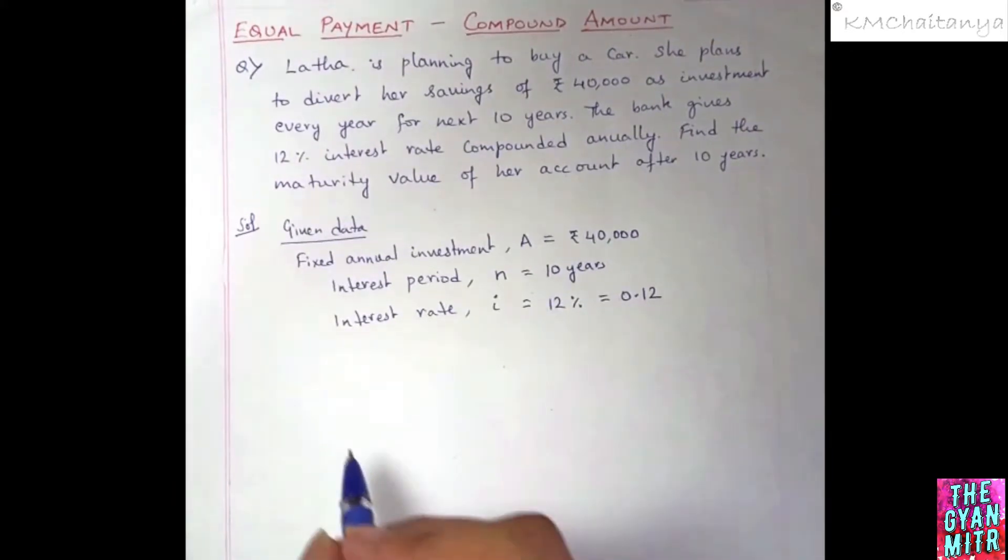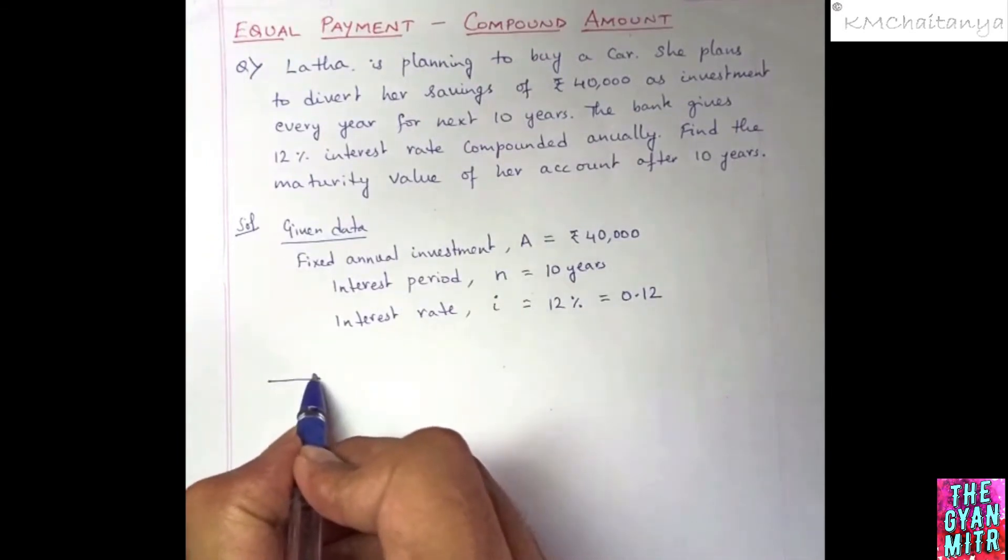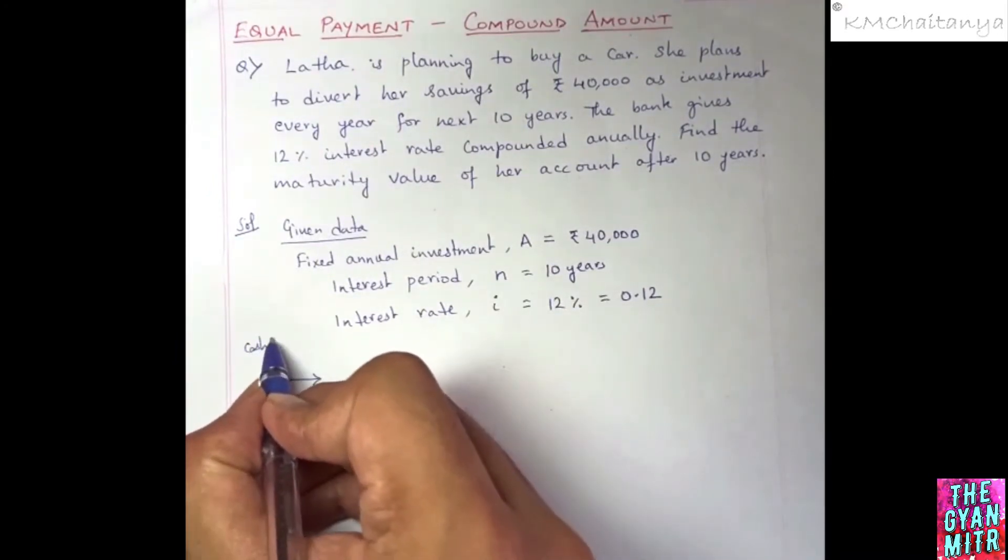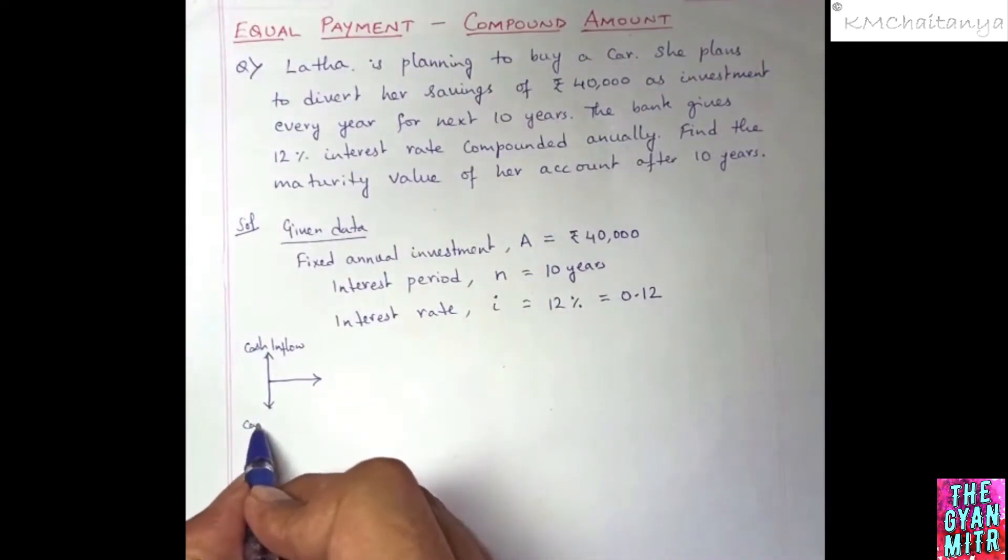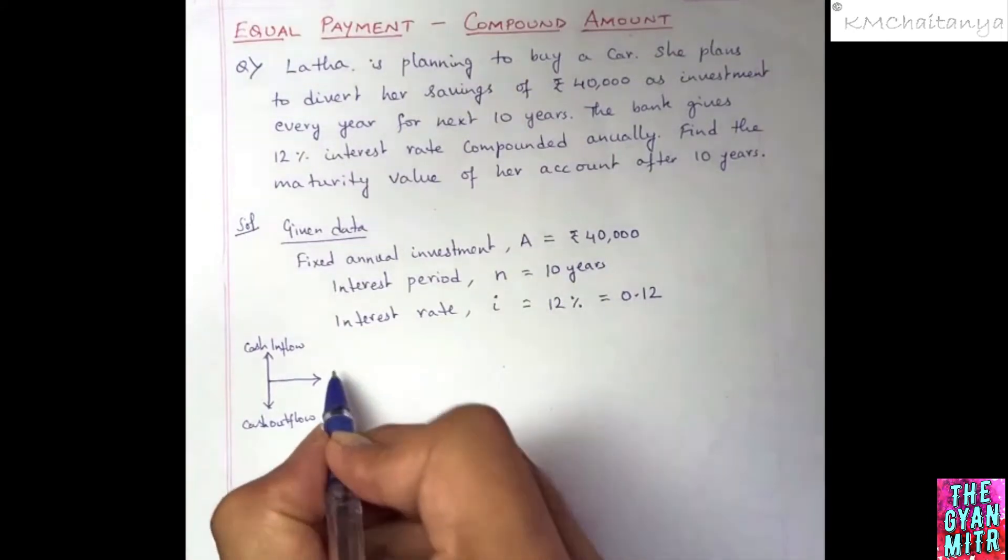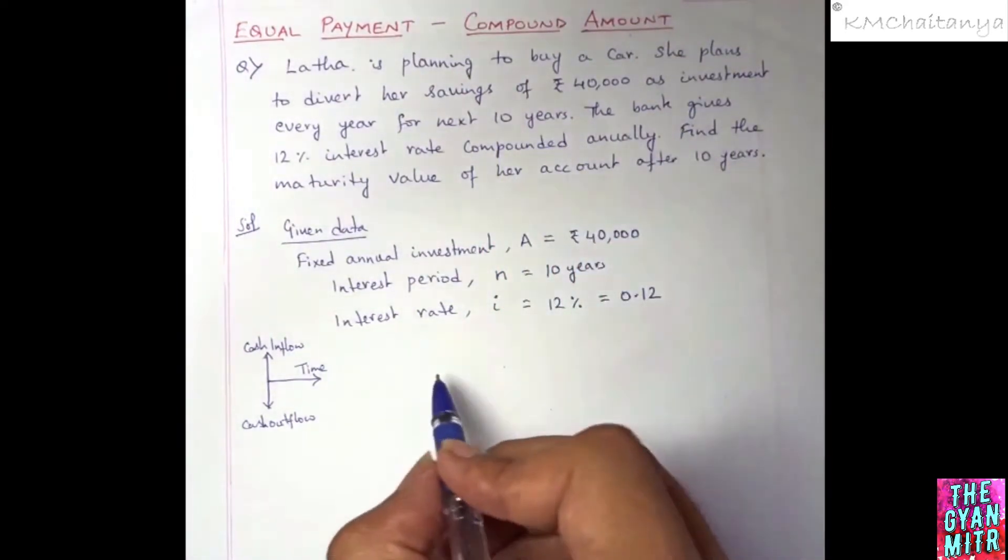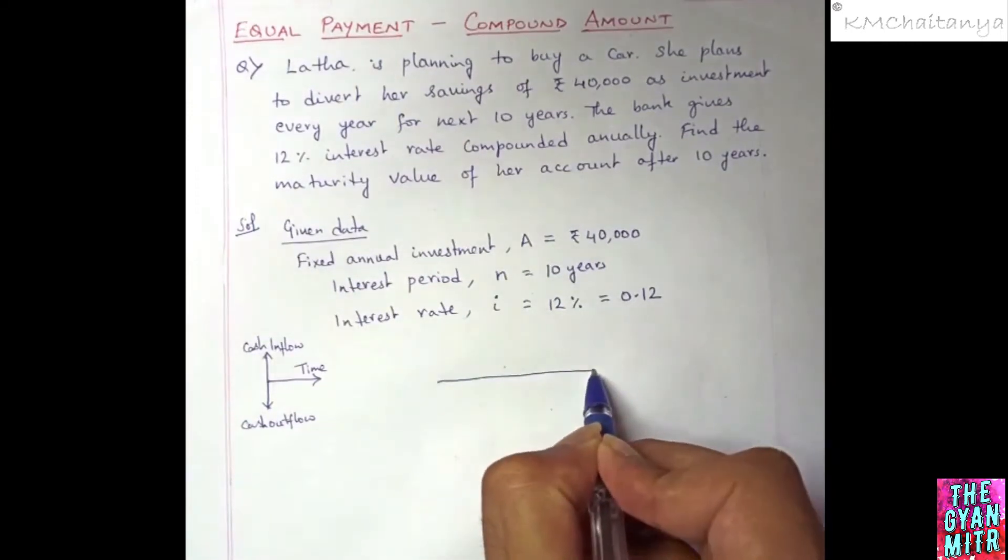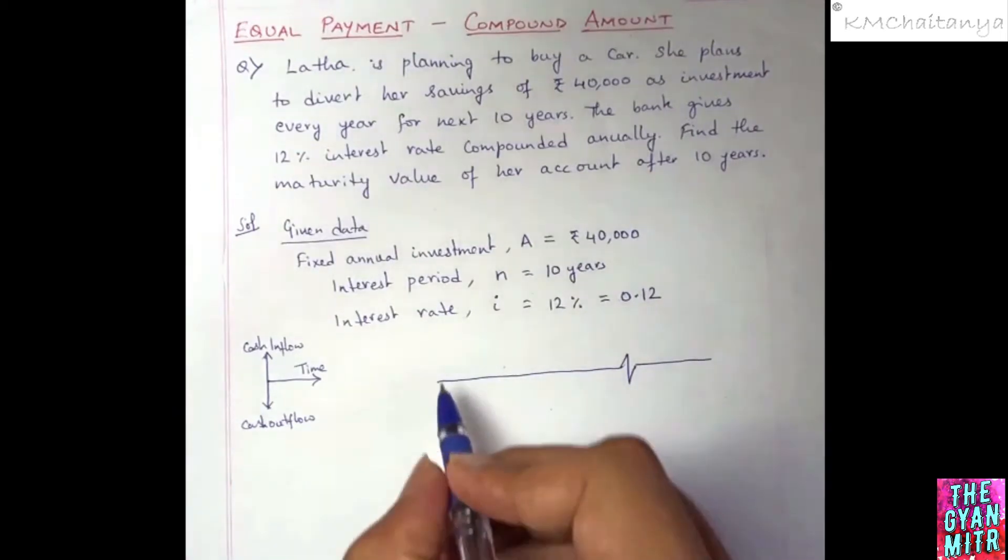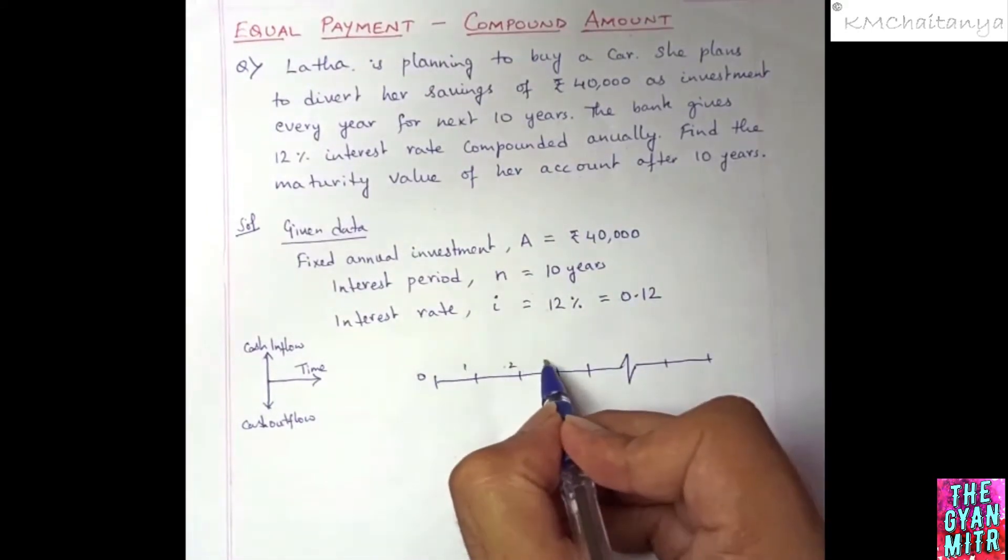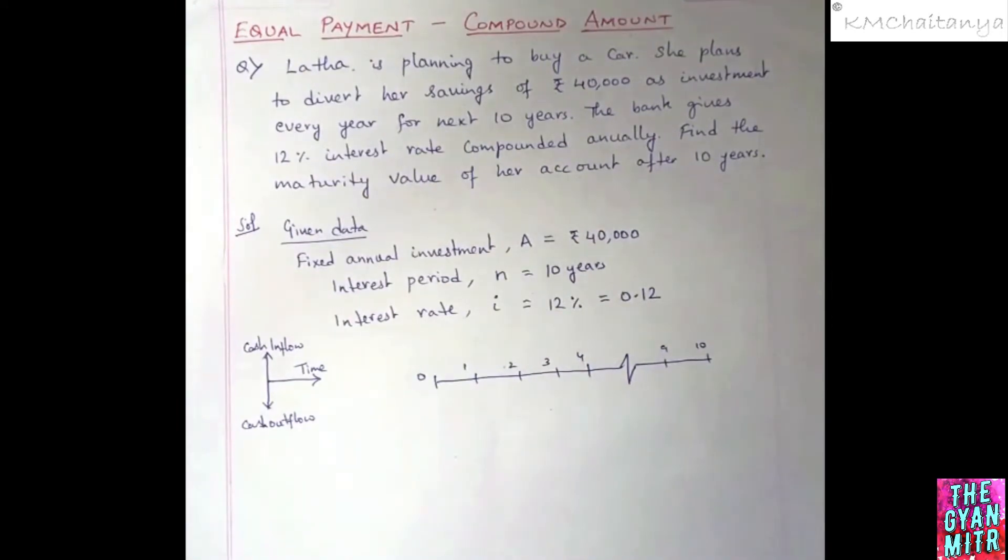Now we are supposed to draw the cash flow diagram. So again, as usual, we have a timeline with cash inflows and cash outflow. The investment is of 10 years, so we will draw the timeline. Let's start with 0, 1, 2, 3, 4, 9, 10. I don't have enough space, that's why I show the continuous mark over here.